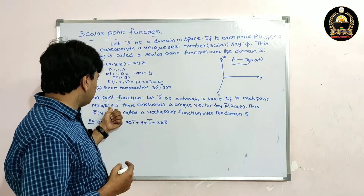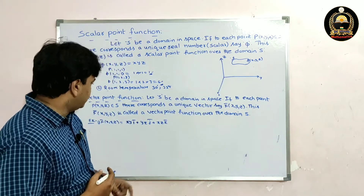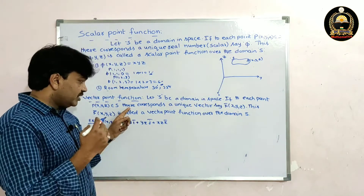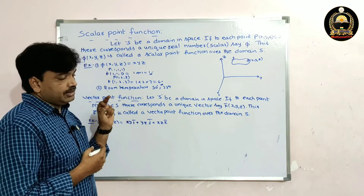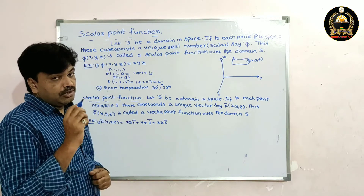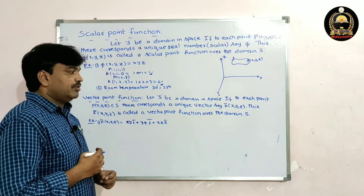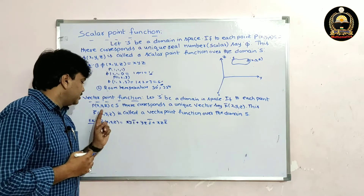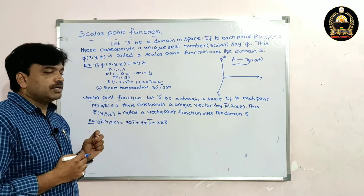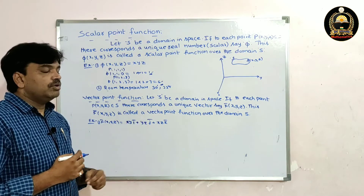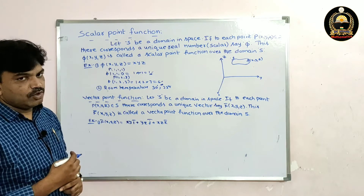In this space with coordinates X, Y, Z there is a domain S. If to each point P of (x, y, z) belonging to S there corresponds a unique vector F̄(x, y, z), then F̄ is called a vector point function over the domain S.